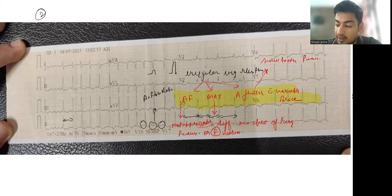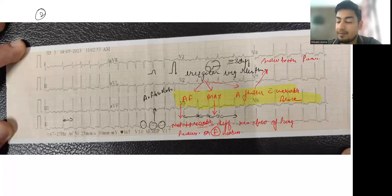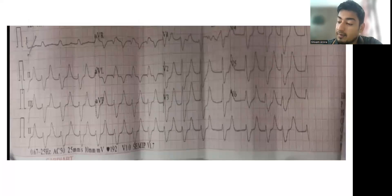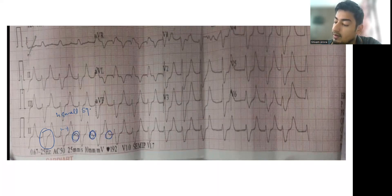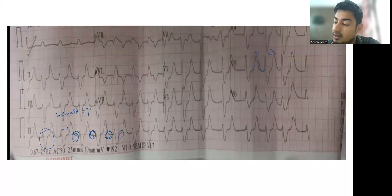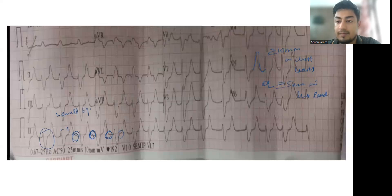In MAT, there are generally more than or equal to three different morphologies of P waves. In this third ECG, the QRS is broad — almost four small squares — there is no P wave before any QRS, and the T waves are tall. Tall T waves are defined as more than or equal to 10 mm in chest leads, or more than or equal to 5 mm in limb leads, or a T wave more than half the amplitude of the QRS.